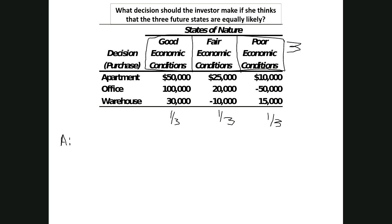Much like the Hurwitz criteria, we're going to compute a score for each one of these decision points — a weighted average of each possible outcome weighted equally. We're going to multiply each outcome by one third and add the results. There are two ways to calculate this: you can calculate it as a simple average, or you can do the full weighted arithmetic. I'm going to calculate this as an average.